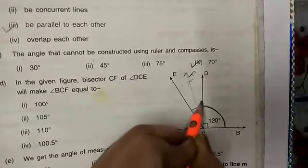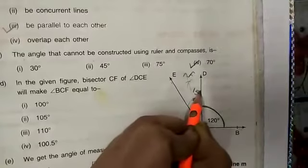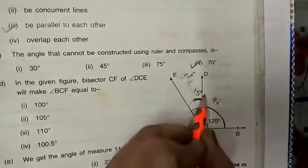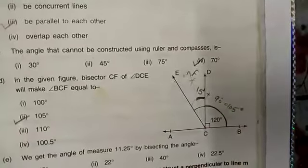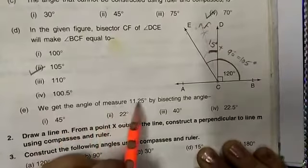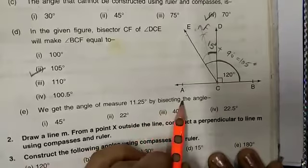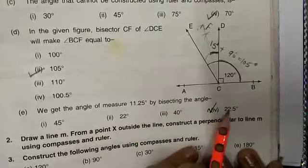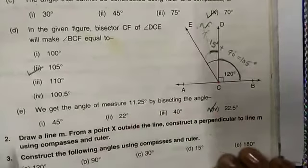So angle BCF will be equal to 90 plus 15, that is equal to 105 degrees. We get an angle of measure 11.25 degrees by bisecting the angle. Which angle must be bisecting from this? This one, because its half is 11.25.